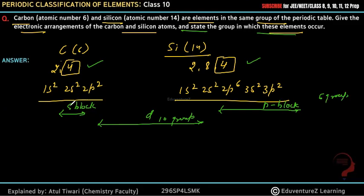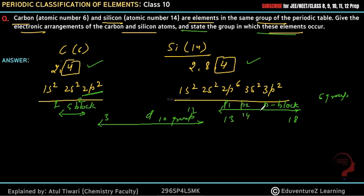The s-block belongs to groups 1 and 2. The d-block covers groups 3 to 12. The p-block starts from group 13: p1 → group 13, p2 → group 14, p3 → group 15, p4 → group 16, p5 → group 17, p6 → group 18. Carbon and Silicon belong to p2, which means they belong to Group 14.